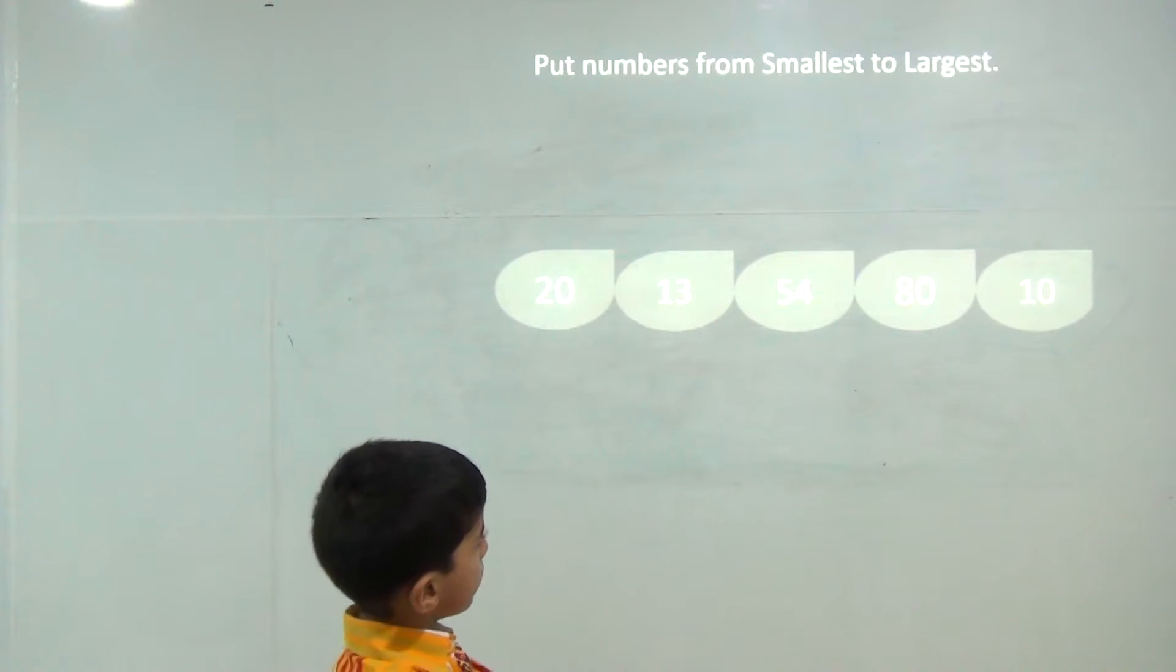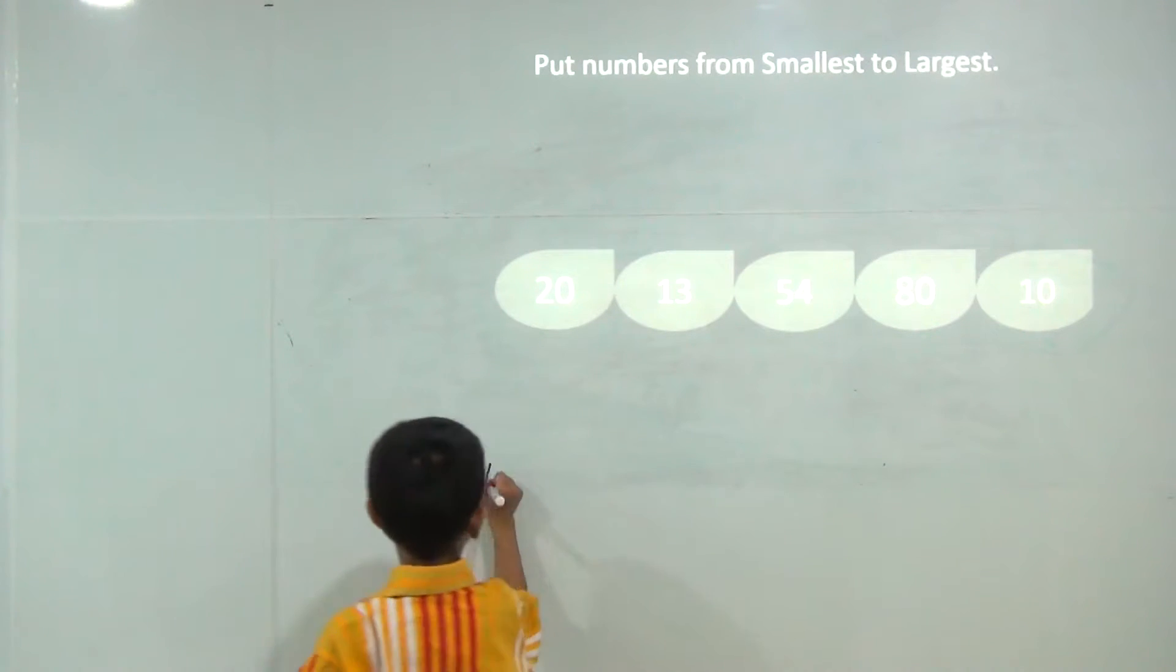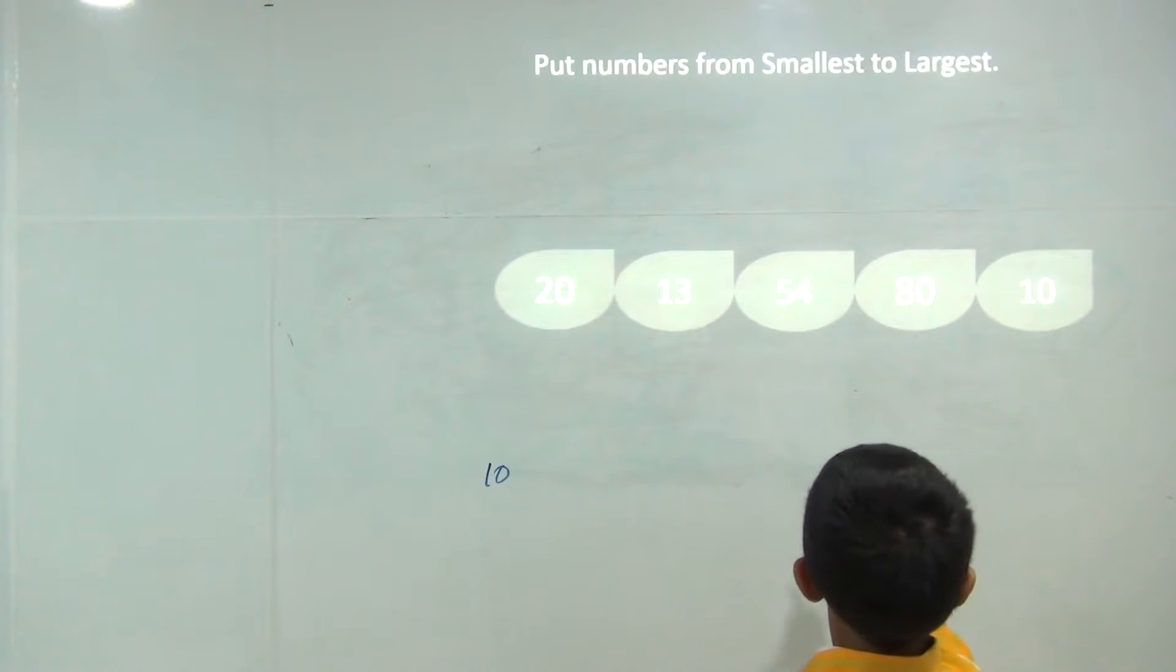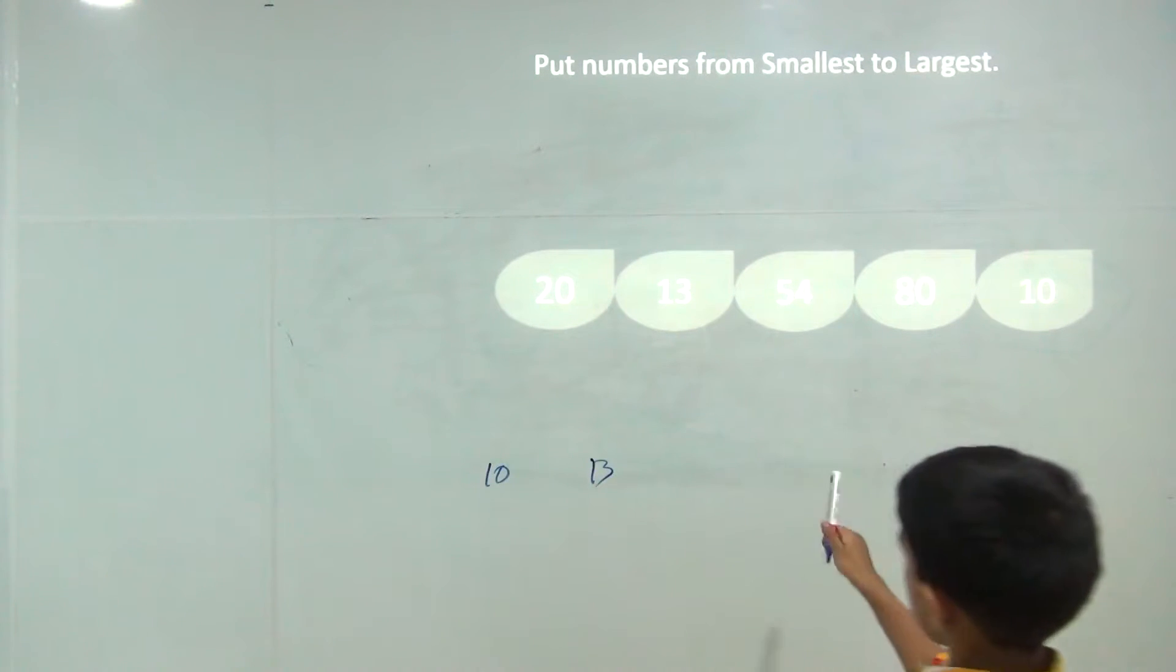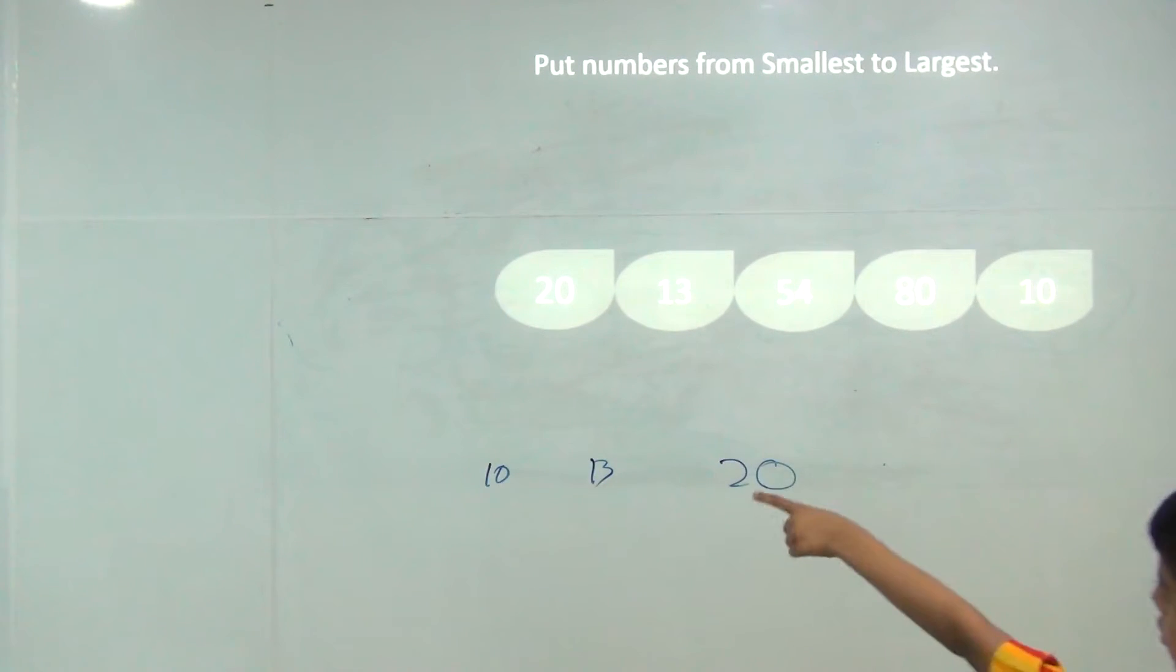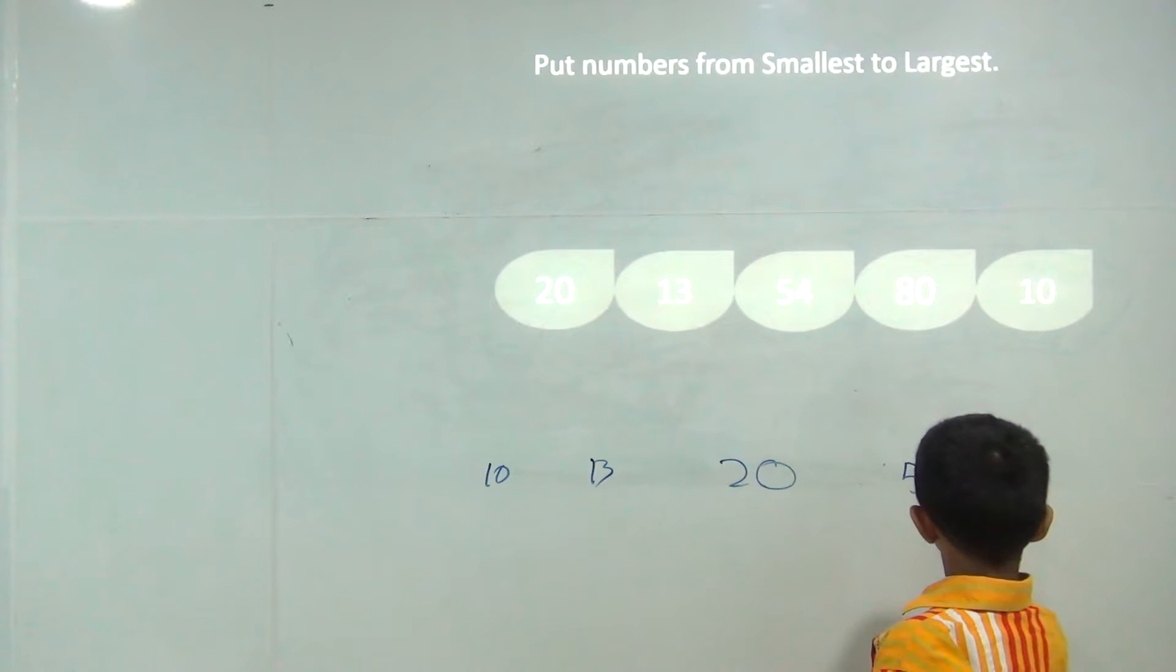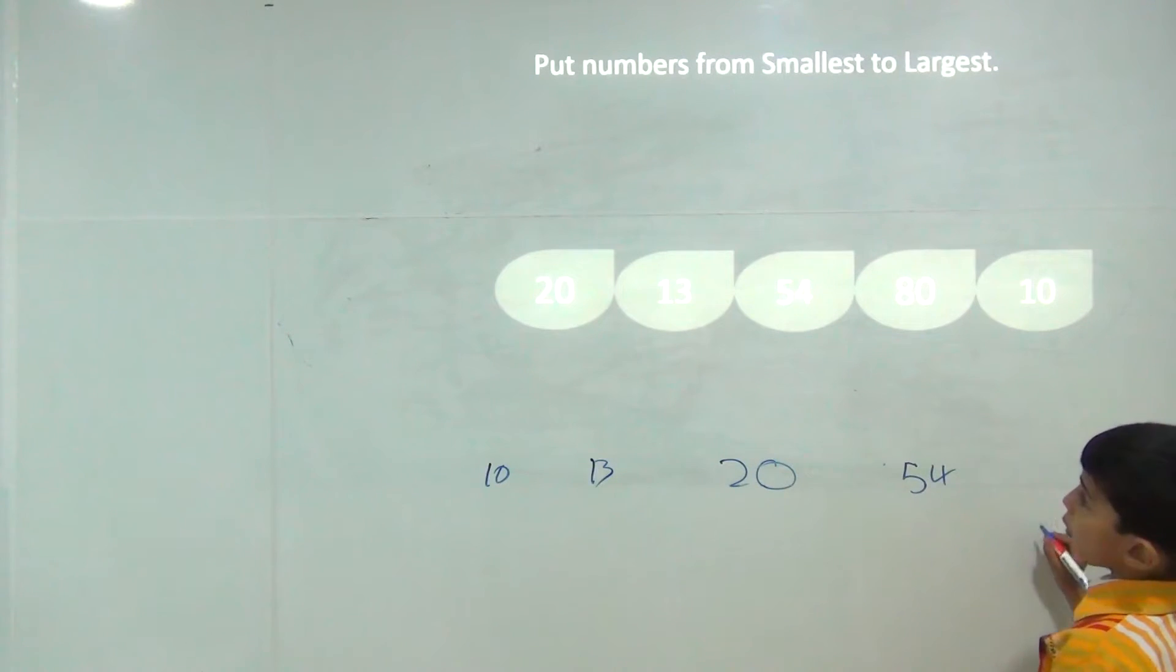The smallest would be 10, greater than 10 is 13, greater than 13 would be 20, greater than 20 would be 54, greater than 54 is 80, because there are no options.